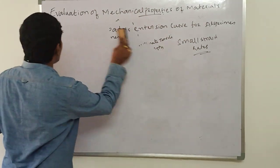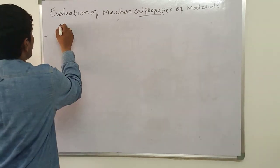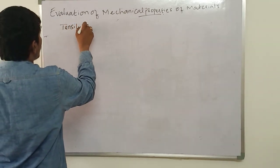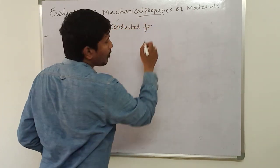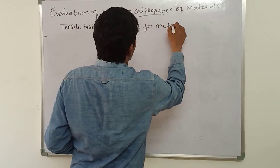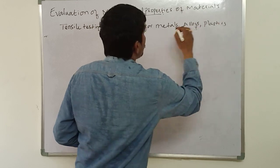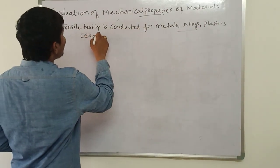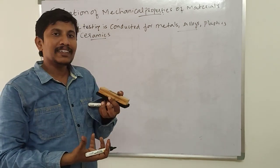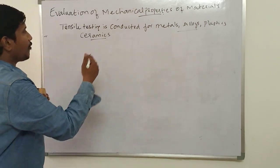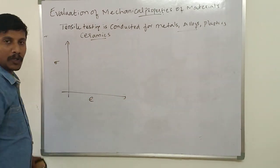We will see typical stress-strain curves for different materials. Tensile testing is conducted for metals, alloys, and plastics. Generally for ceramics, the tensile test cannot be conducted because while aligning the workpiece, it gets fractured. For metals, the stress-strain curve looks like this.